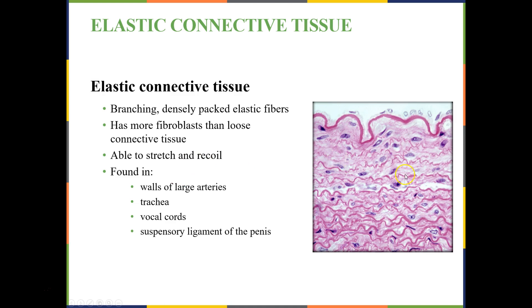Then we have elastic connective tissue. Elastic connective tissue is composed of fibroblasts that produce elastic fibers. These elastic fibers help the tissue itself function, stretch, and recoil. You'll find this in areas where you need to maintain shape, such as large arteries and vocal cords. The arteries must maintain shape so that blood can be pumped through our system properly — if arteries become too wide, there won't be enough pressure on the fluid moving, causing problems with getting nutrients to different tissues.